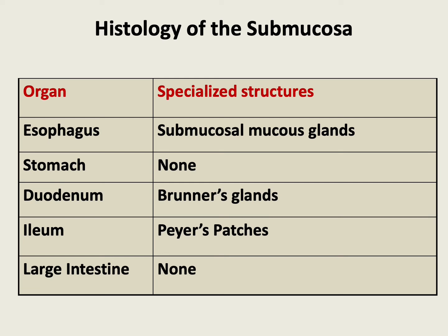Regarding the submucosa histology of different parts: in the esophagus, we have submucosal mucous glands; whereas in the stomach, no mucous glands are present in the submucosa. In the duodenum, these glands are called Brunner's glands. In the ileum, we have specialized structures called Peyer's patches. Whereas in the large intestine, no such glands are seen.